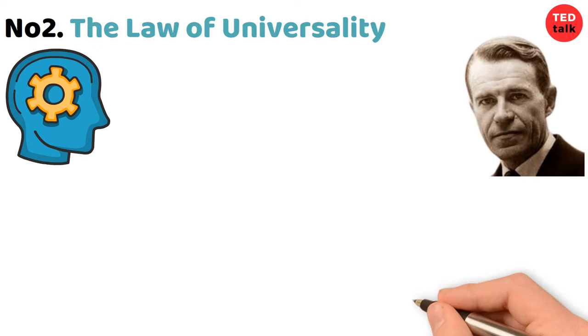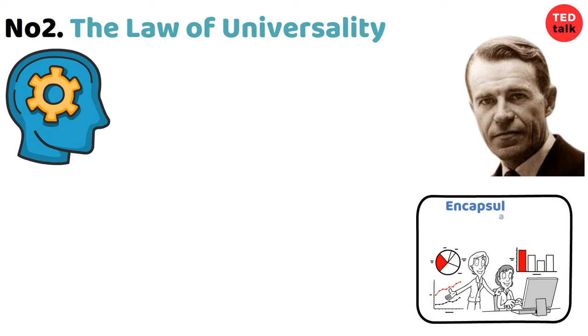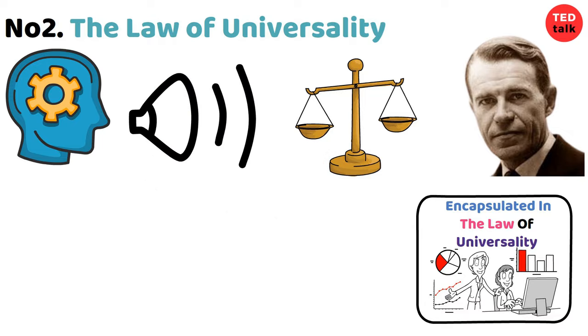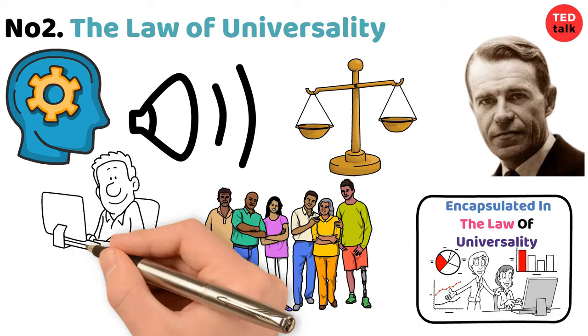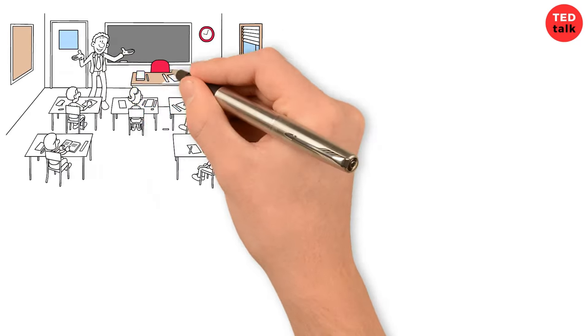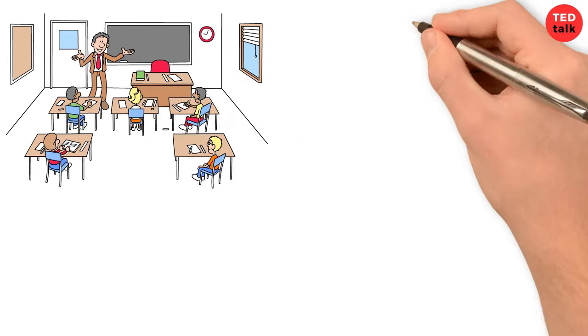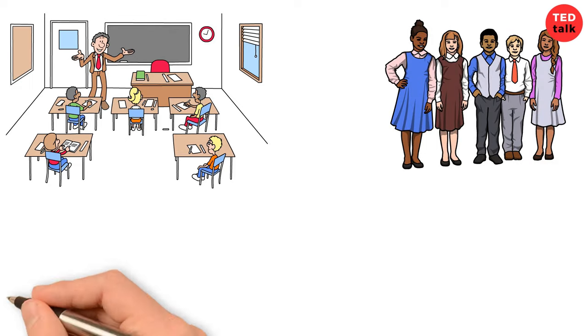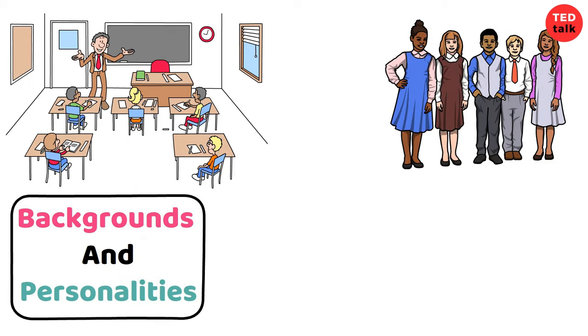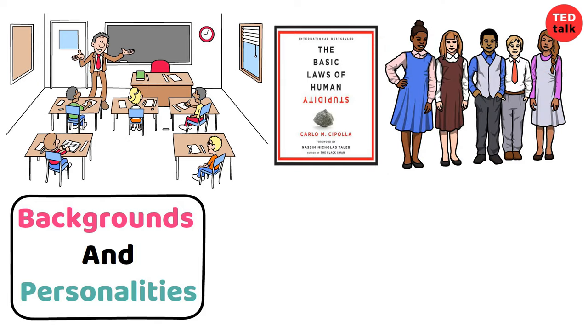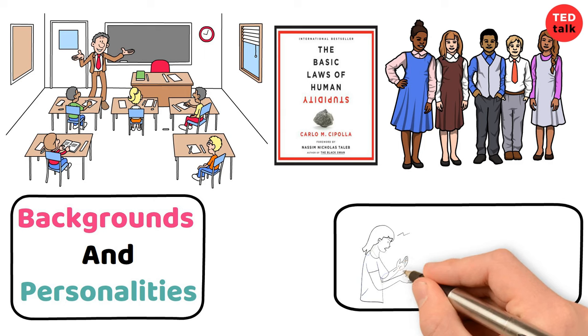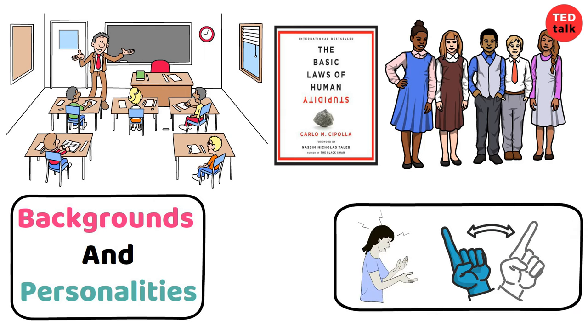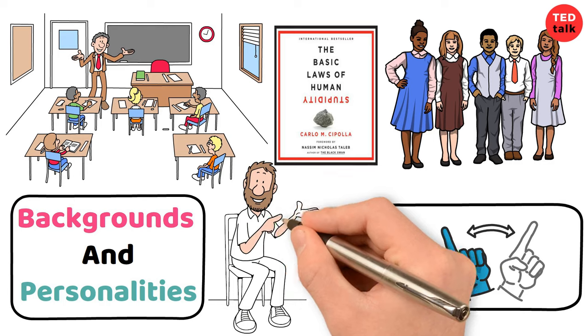Number two: the law of universality. In the grand exploration of human behavior, Carlo M. Cipolla unveiled his remarkable insights encapsulated in the law of universality. This law, though it may sound complex, holds a simple yet profound truth about the nature of silliness in all of us. Picture yourself in a big classroom surrounded by classmates of different ages, backgrounds, and personalities. Now, Cipolla's law of universality tells us that the chance of someone doing something silly doesn't depend on anything else about them.